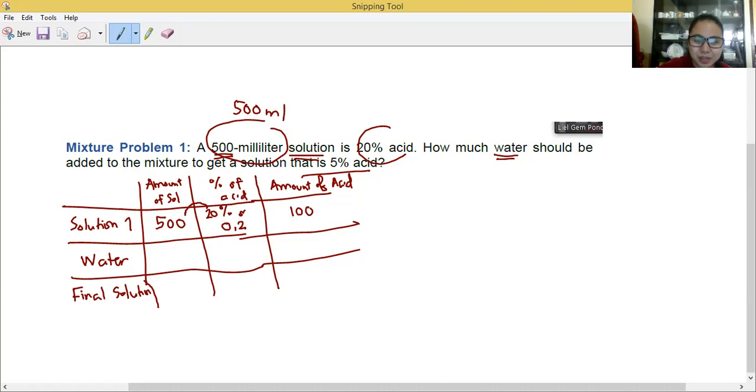The next one. Do you know how much water you're going to place? No, right? So we place here x. And remember, water has no acid, so the percentage is 0. We multiply x times 0. The answer is 0.